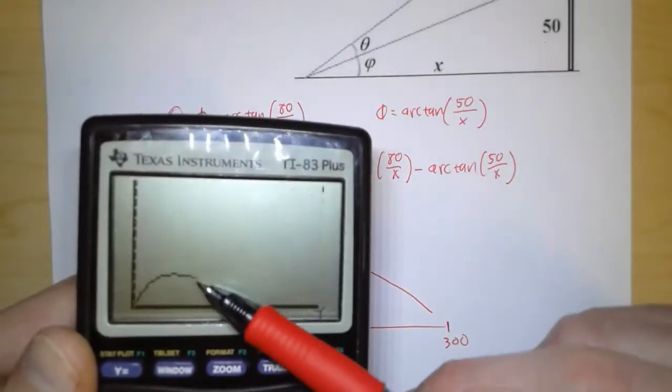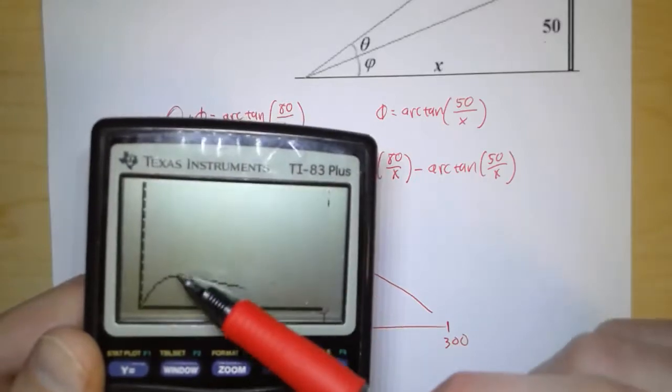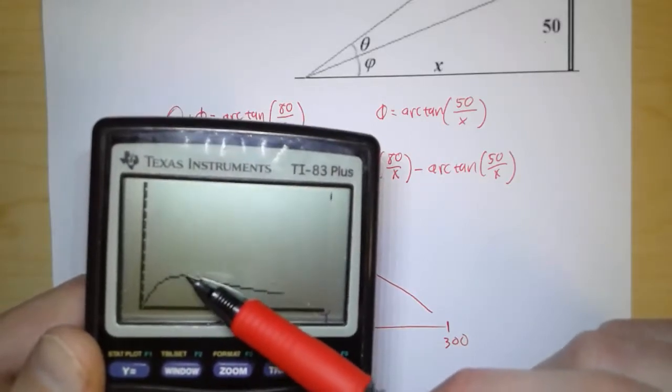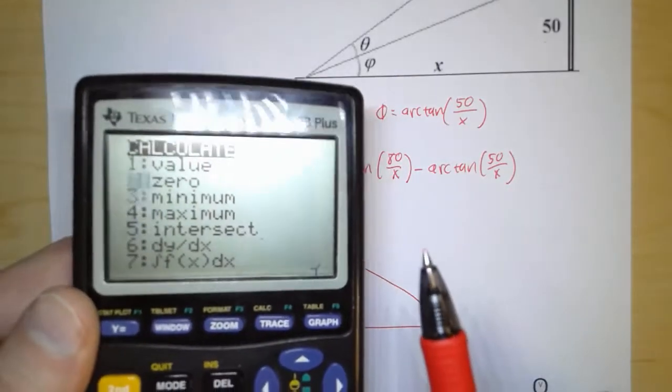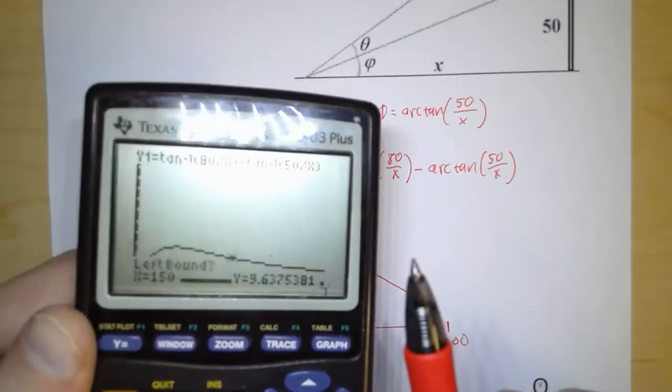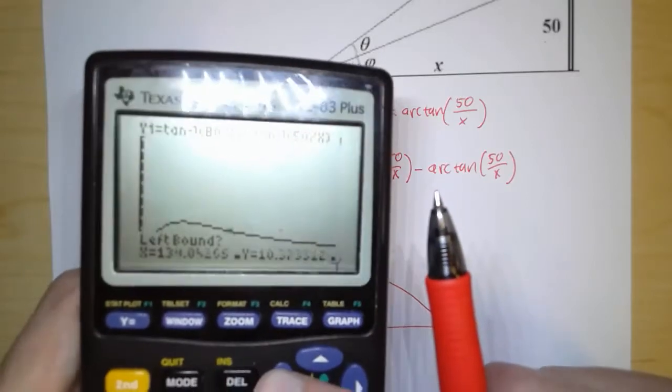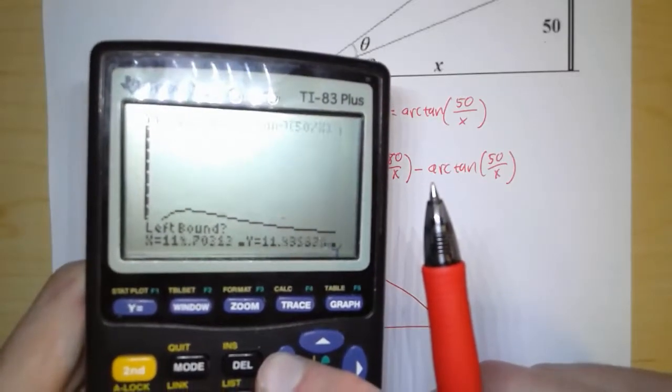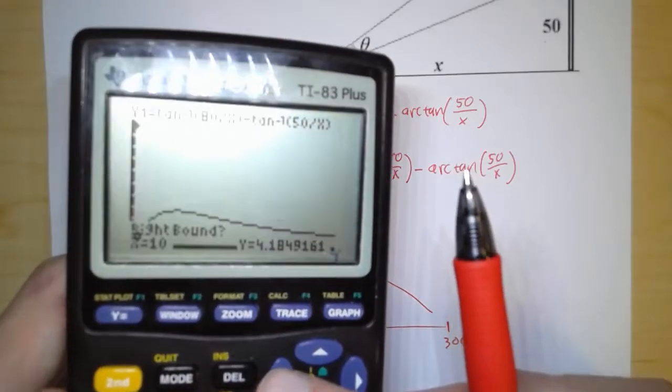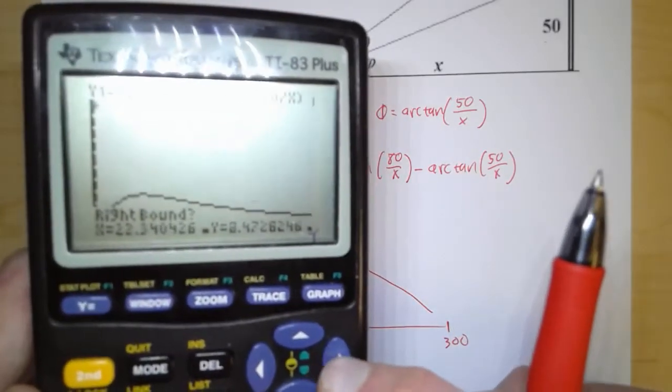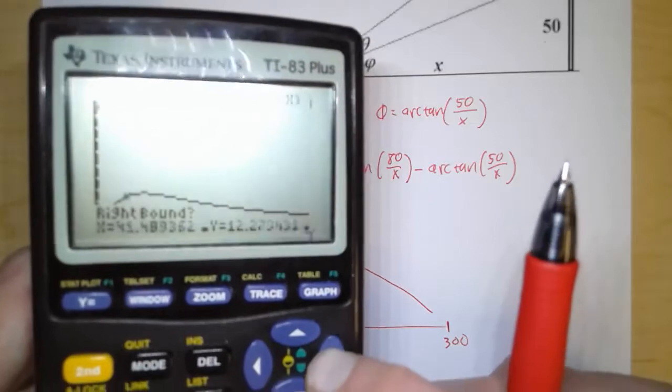So it goes up, and there it goes down again. So we're interested in finding that point right there. So I will use my maximum command. So second trace, go to maximum, and my left bound, yeah, I'm feeling lazy. I don't want to scroll all the way. So I'll just say 10. And my right bound is, let's get close to it.